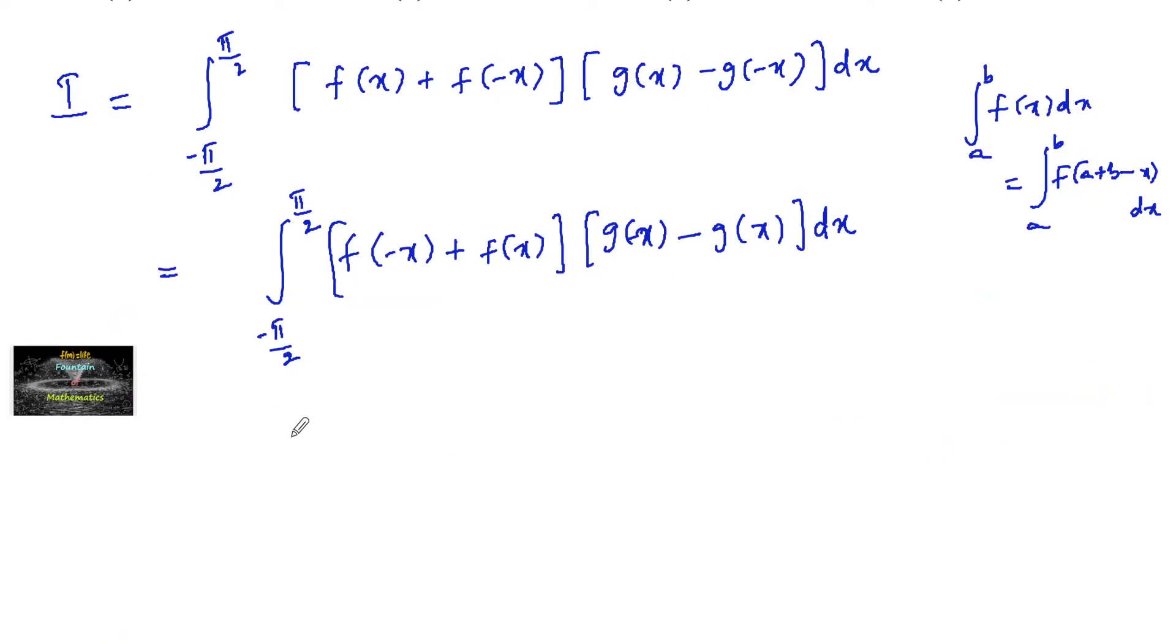So this is I, which equals integral minus pi by 2 to plus pi by 2, f of x plus f of minus x into, if I take minus common, g of x minus g of minus x dx, which equals minus I.